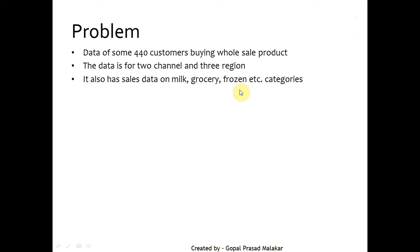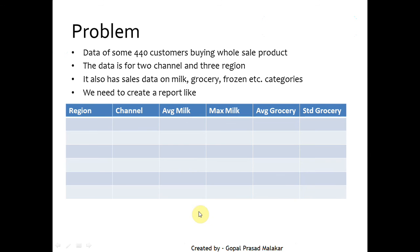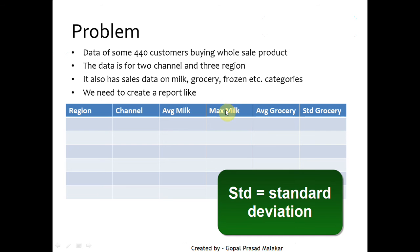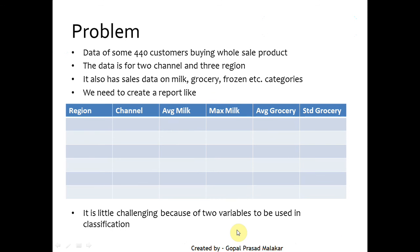The spending and consumption data spans several categories. We need to produce a report like this. For each region — region 1 and region 2 — and for each channel — channel 1 and channel 2 — you have to produce average milk, maximum milk, average grocery, and standard deviation of grocery. This whole task is a little challenging for two key reasons.